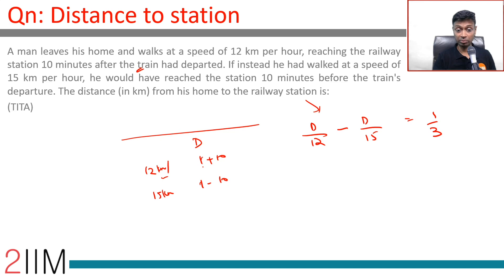What are we doing here? The difference between these two times is 20 minutes. Time taken for this, time taken for this, the difference between these two is 20 minutes. We take the distance in kilometers and speed in kilometers per hour, we'll get the answer in hours. The difference is 20 minutes, which is one third of an hour.